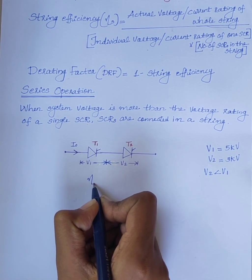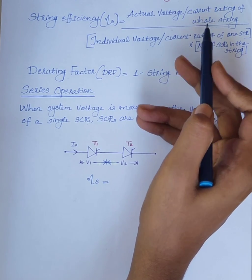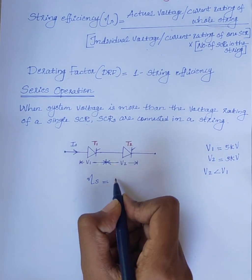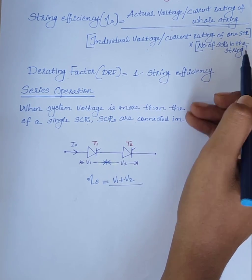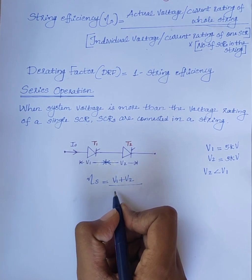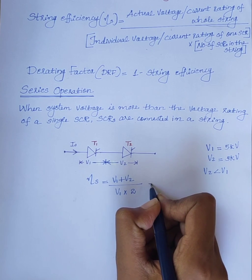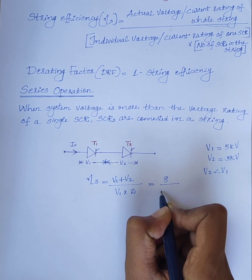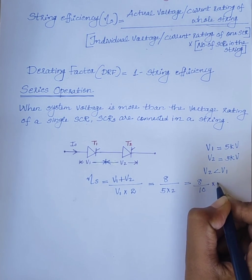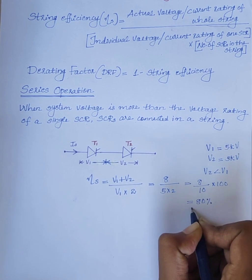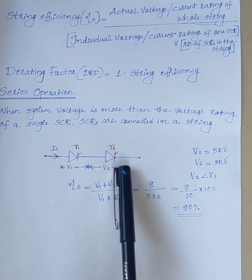Therefore, string efficiency η_s equals the actual voltage rating of the whole string (V1 + V2) divided by the individual voltage rating of one SCR (taking the highest value V1) multiplied by the number of SCRs (2). This gives 8 divided by 10, so string efficiency is 80% instead of 100%. For the same leakage current, unequal voltage distribution occurs.